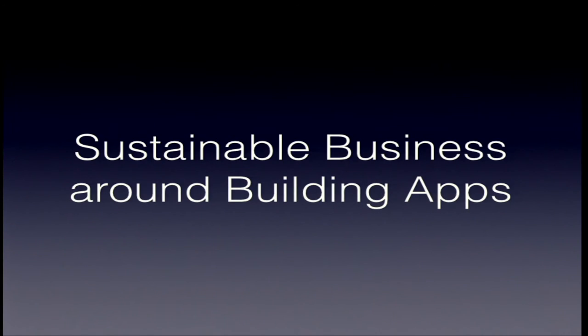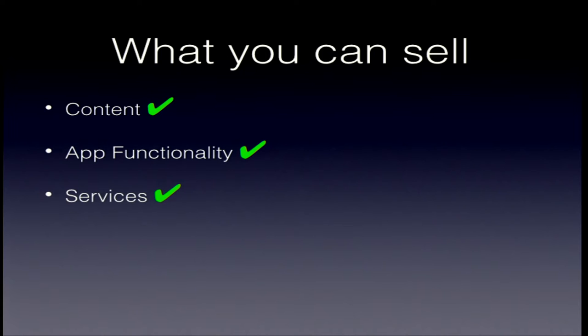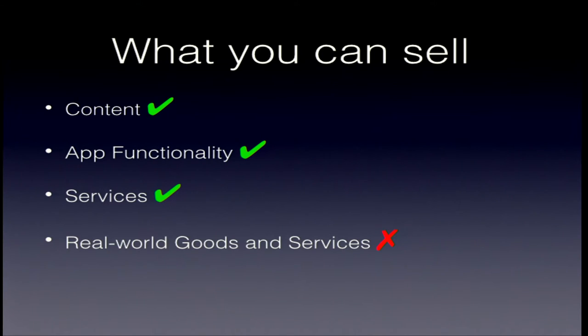The topic is how to build a sustainable business around building apps. Let's briefly review what kinds of things you can sell via in-app purchases: content, functionality, and services — for example, something like Evernote, software as a service. Some things you can't sell: you can't sell real-world goods or services via in-app purchases, and you cannot sell unsuitable content. Apple is the judge of what is unsuitable.